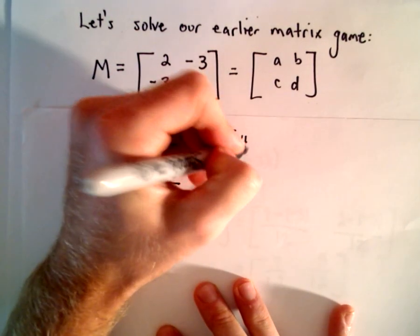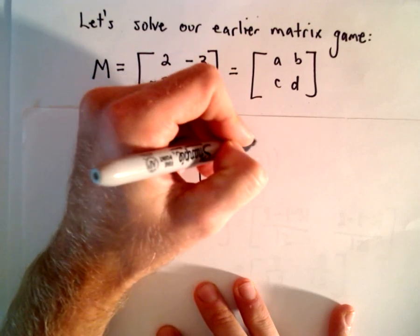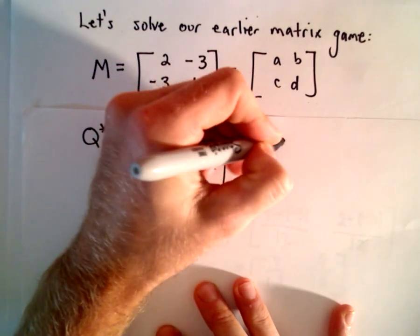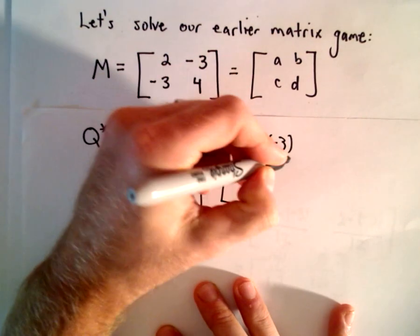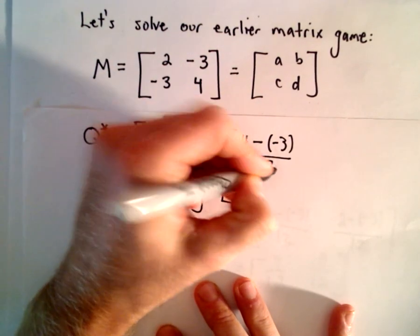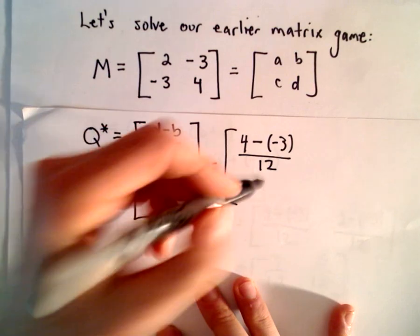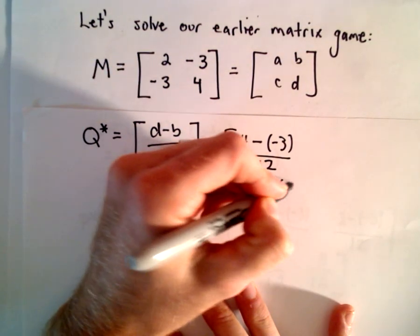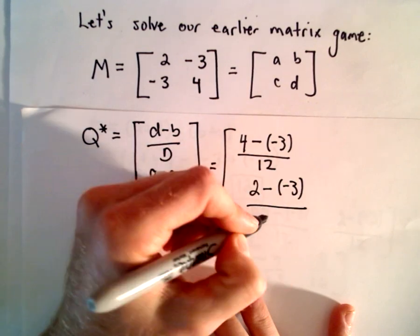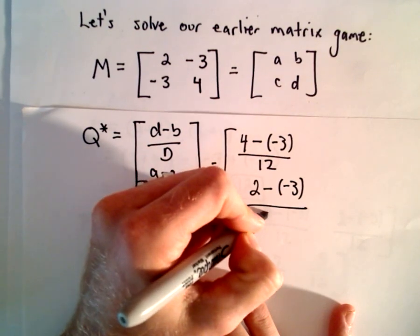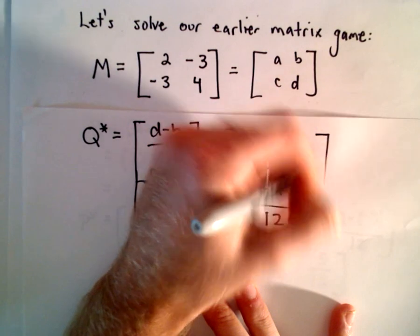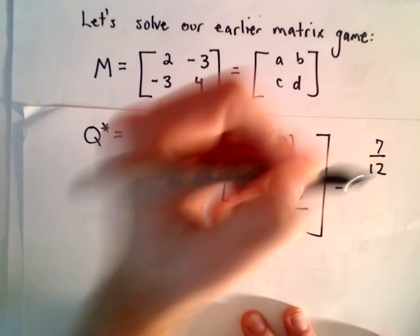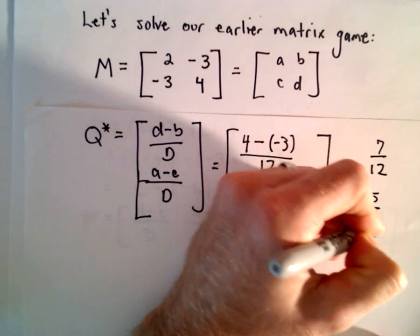So D will be 4, so we've got 4 minus negative 3, that's all divided by capital D, which we saw as 12. And then we have A, which is 2, minus C, which is going to be negative 3, again, all over capital D, which is 12. And if we simplify, we actually get 7 over 12 and 5 over 12.